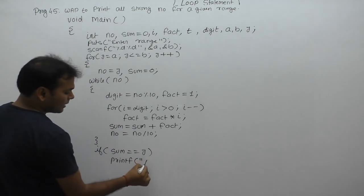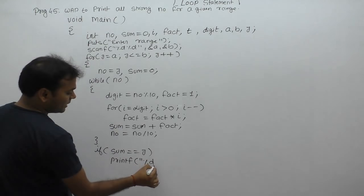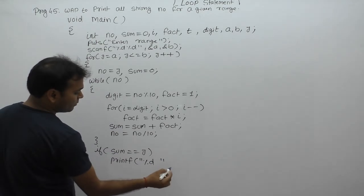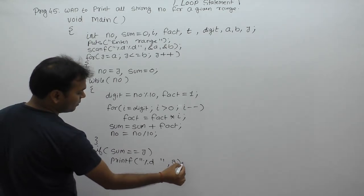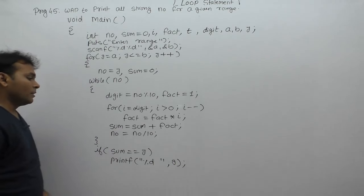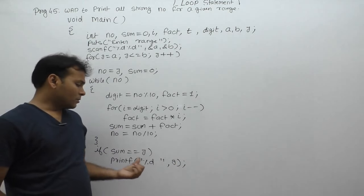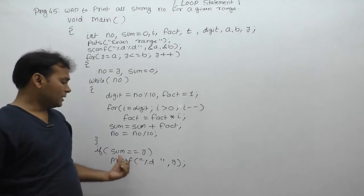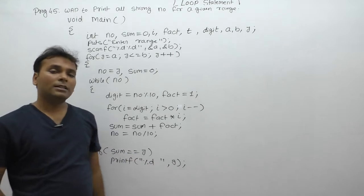Instead, display the current value of the tested number. Every time the tested value is j, so basically display the value of j. The current value of j is a strong number, so display j because it satisfies the given conditions.